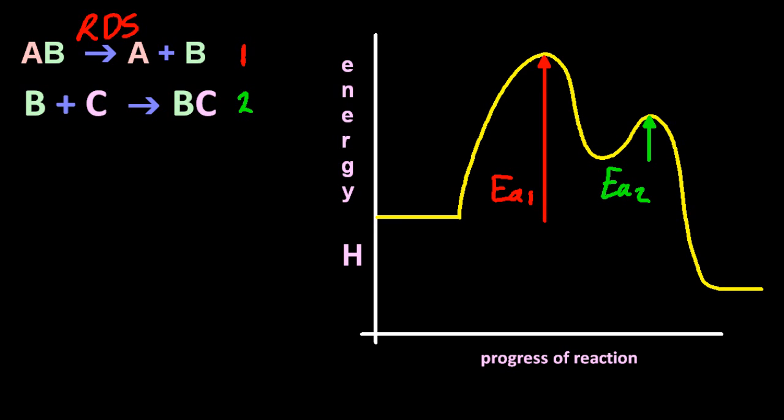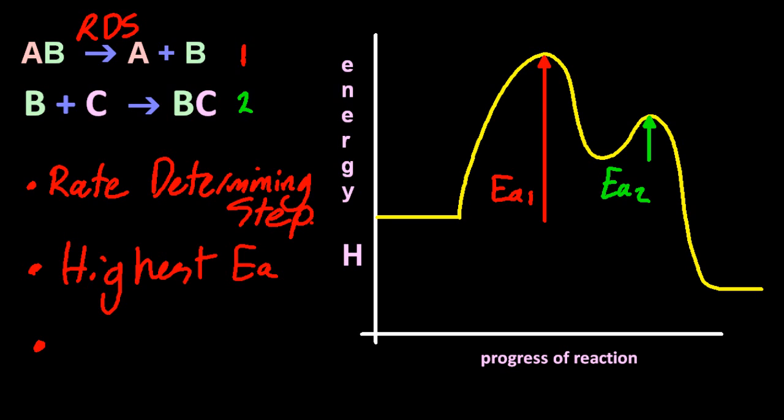Now since EA1 is greater than EA2, that's going to be the rate-determining step, the first step. It has the highest activation energy, therefore it is the slowest step in that mechanism.